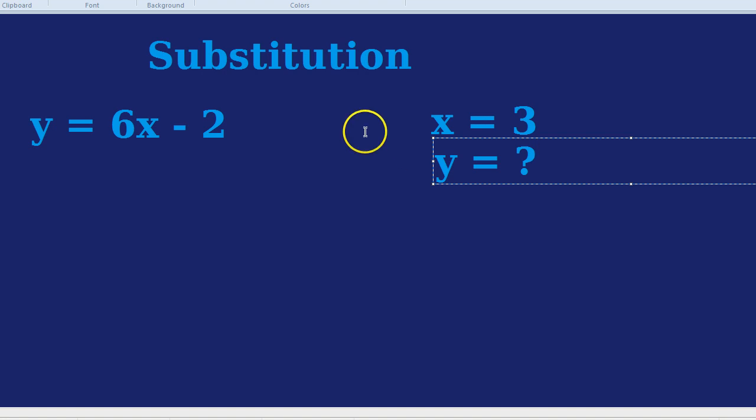Well, what substitution involves is where we replace the symbol x, in this case, with the number 3. What might help is if you literally draw the same equation again, but instead of when you're drawing the x, draw a 3 with brackets.